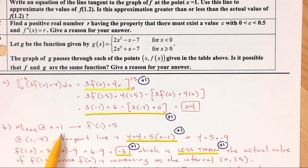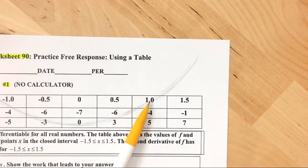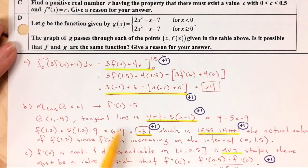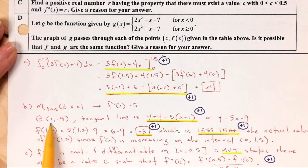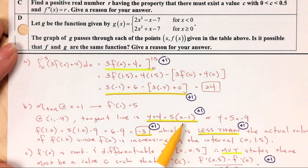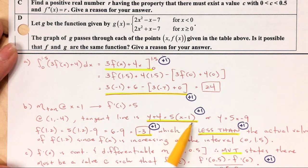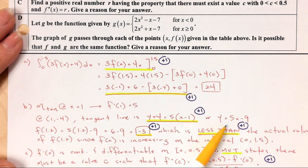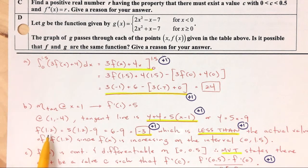At the point (1, something) — looking up at the table, it's (1, negative 4). So the point (1, negative 4) on the actual graph has a slope of 5. Using that, the tangent line is y minus negative 4 equals 5 times x minus 1. You can box that as your answer, or convert it to y equals mx plus b form. They also want you to use this line to approximate the value at x = 1.2 — this is linear approximation. Plugging x = 1.2 in gives negative 3.